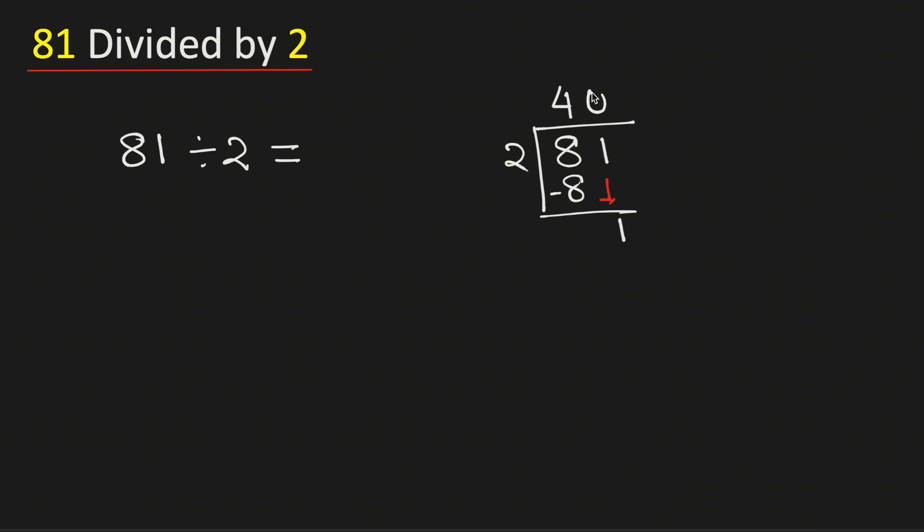We know that 2 times 0 is 0. Subtract, we get 1.